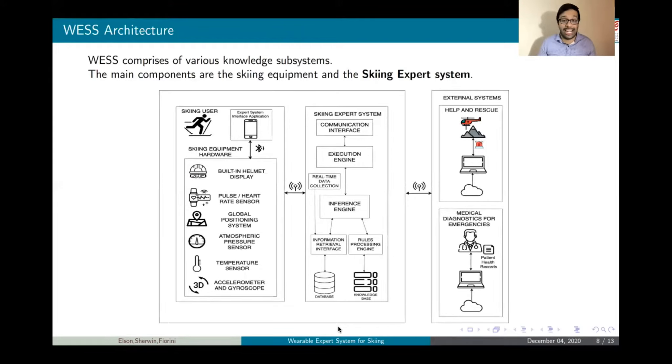Next up, we have the WESS architecture. The WESS comprises of various knowledge subsystems. The main components are the skiing equipment, which we discussed earlier, and then the skiing expert system. The skiing expert system has got a communication interface, execution engine, real-time data collection, inference engine, information retrieval engine, rules processing engine, and we have a database and knowledge base. We also have connection to the external systems of the help and rescue and the medical teams that will help monitor the skier and guide the skier during skiing activity, or in case of any emergency, help them out.